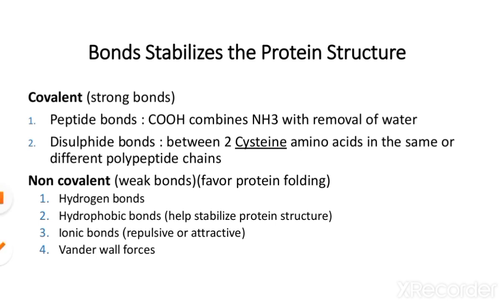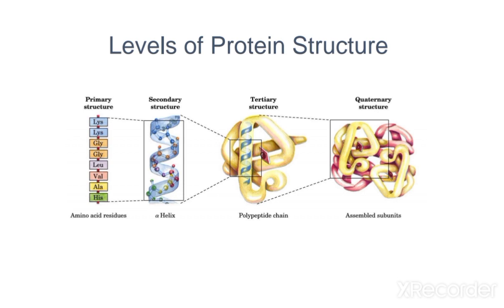These are the levels of protein structure. The protein structure is available in basically four forms: number one is primary structure, which is a straight chain; number two is secondary structure, which is somewhat helical; number three is tertiary structure, which is more complex; and number four is quaternary structure, in which more than one tertiary structure is present. Due to non-covalent bonding, these folds increase in complexity.